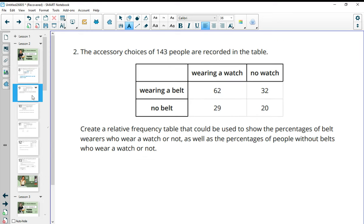Number two, the accessory choices of 143 people are recorded in the table. Create a relative frequency table that could be used to show the percentages of belt wearers who wear a watch or not, as well as the percentage of people without belts who wear a watch or not. So relative frequency means to turn all of this into percent. So we want percent instead of the raw data. So what we're going to need to do is figure out how many people were surveyed, which they told us is 143. So we're going to take and divide these each by the total.